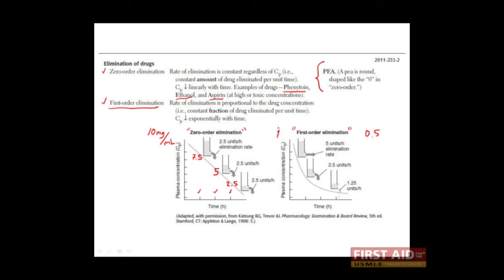Suppose that we started with a plasma concentration of 10 milligrams per milliliter. By the end of the first hour, this has been decreased by 50%, therefore our concentration is 5 milligrams per milliliter. By the end of the second hour, the concentration has decreased by another 50%, and therefore our plasma concentration is 2.5 milligrams per milliliter. By the next hour, we're down to 1.25 milligrams per milliliter. Notice that this kind of graph gives an exponential curve.